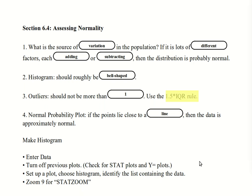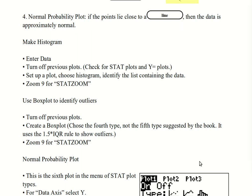To make a histogram, we enter the data, making sure we've turned off any previous plots. We set up the plot, choosing the histogram, identify the list containing the data, and then go into zoom and press 9 for zoom stat. That's pretty common practice.